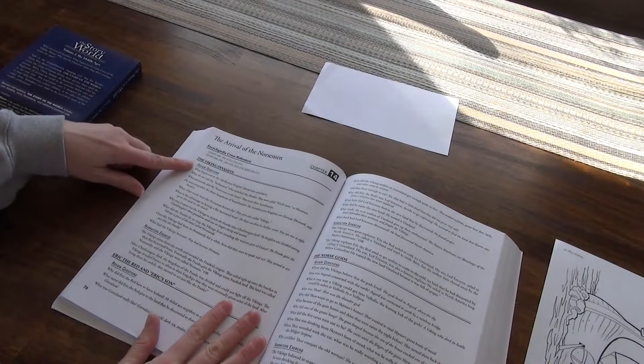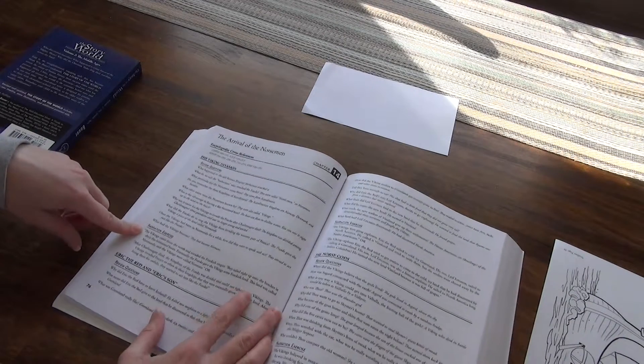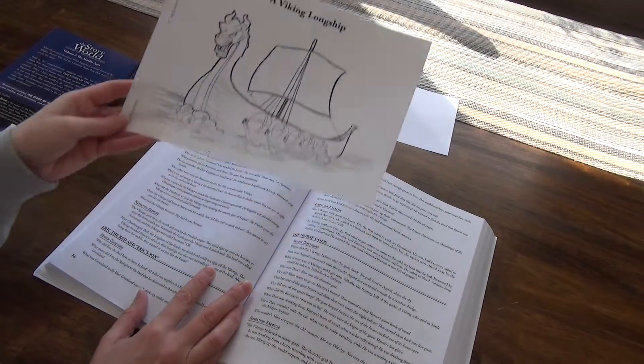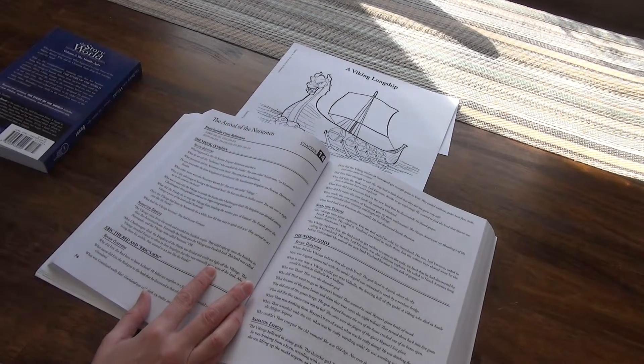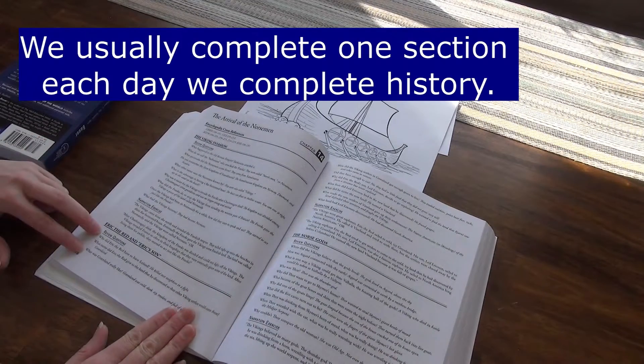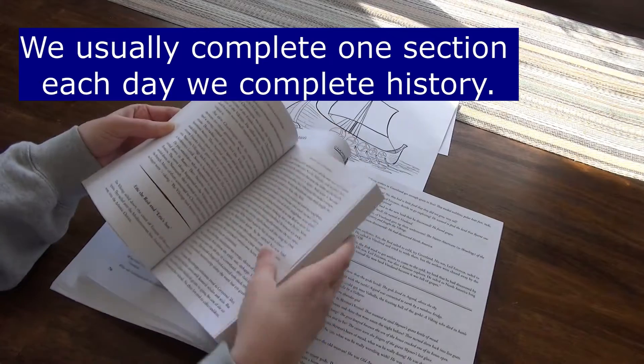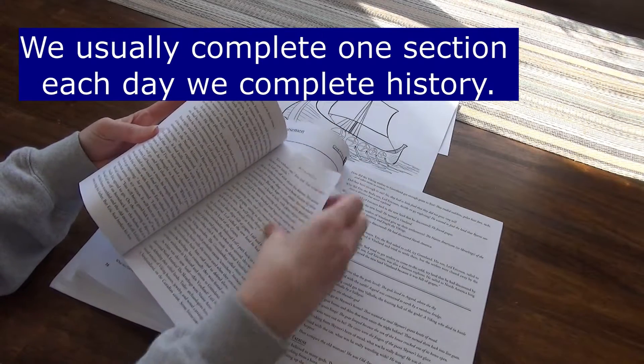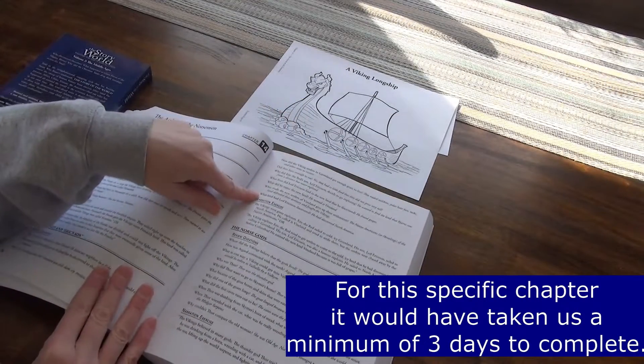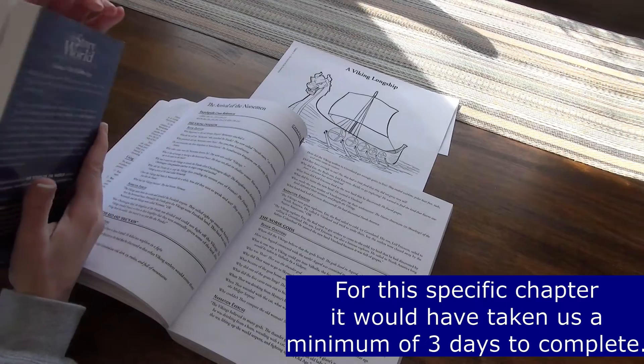And I would come here to the review questions. I would ask the review questions. And then I would have her do a narration exercise. Now we have out of the activity book a coloring page. So she could color that page while I was reading. She could color it afterwards. You could save it for a different time. And then we have the second section where we would read the second part of Chapter 14, which would be Erik the Red and Erik's son. So usually it's not a ton of reading for each section. And then you can get into doing the review questions, the narrations, and then you go to the third section in this chapter, which happens to be the Norse gods.